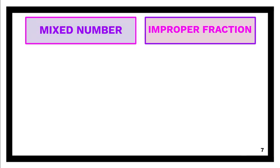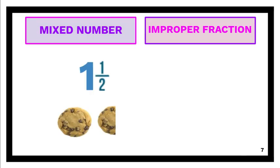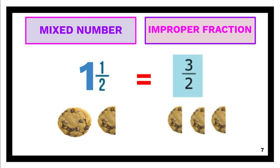So mixed numbers and improper fractions are related. One and a half is the same as three halves. That's the same amount of cookies.